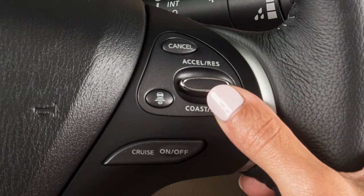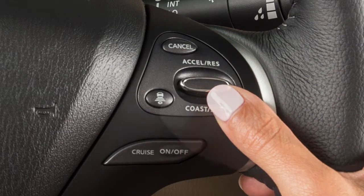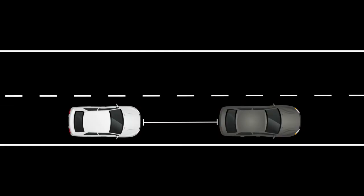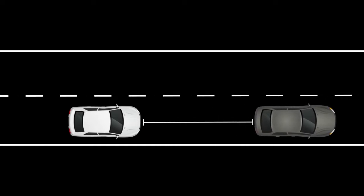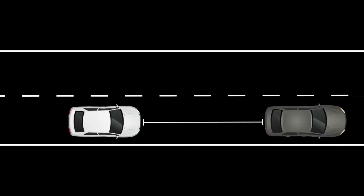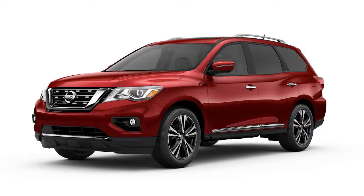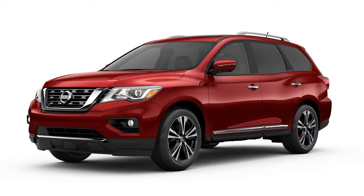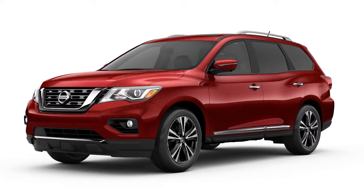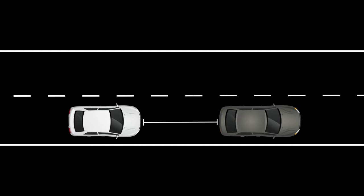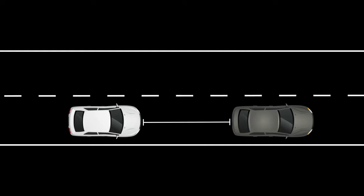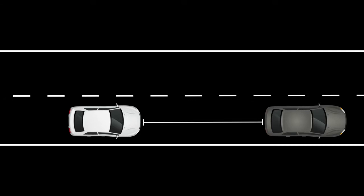To change the distance to the vehicle ahead, push the distance switch. Each time the distance switch is pushed, the set distance will change to long, average, short, and back to long again, in that sequence. Each time the engine is started, the initial setting becomes long. The distance to the vehicle ahead changes according to the vehicle speed — the higher the vehicle speed, the longer the distance.